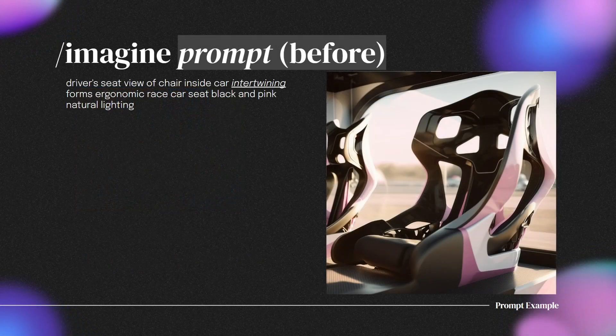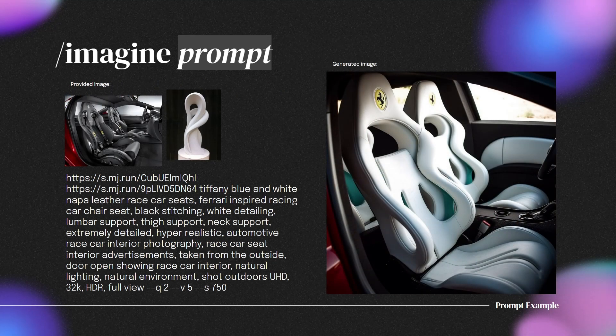Generated images without prior knowledge in Mid Journey would look something like this. In this example, we are just using a descriptive word — 'intertwining' — to inspire the car seat design. An image of the desired car type and one with the intertwining element are included with the prompt that we have come up with in this example. The generated image looks more realistic with natural lighting and a contextualized background.